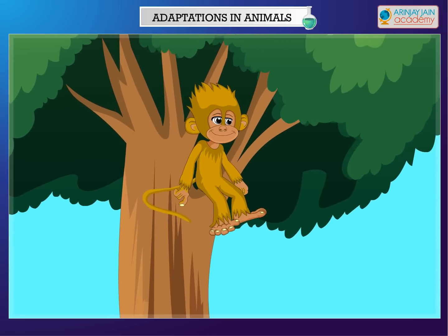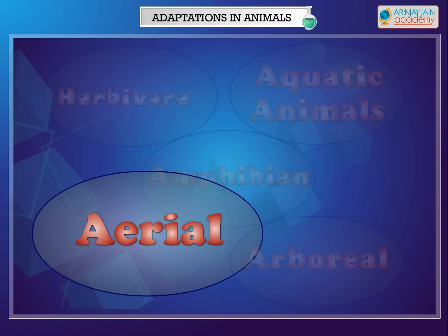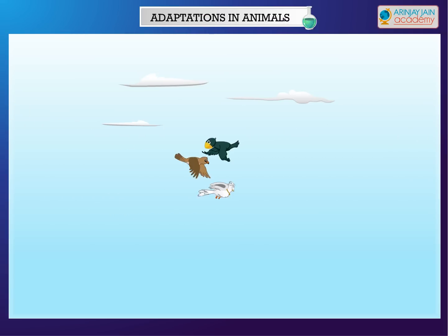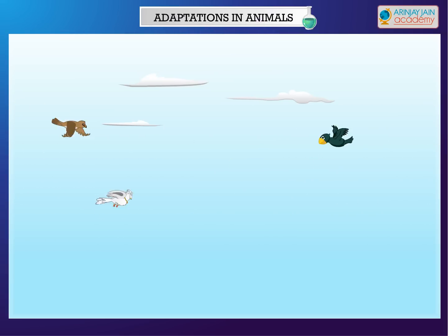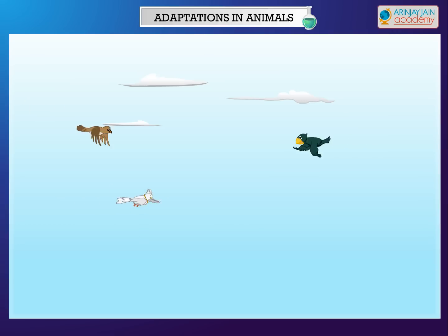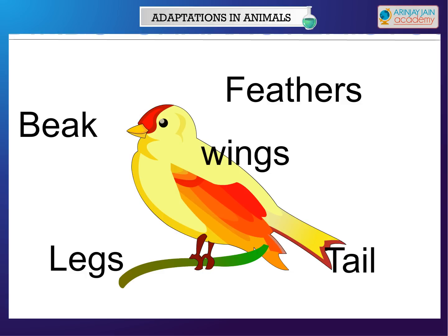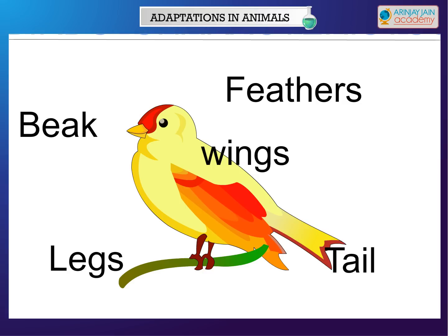Aerial Animals. Animals that fly are called aerial animals. Birds and bats are examples of aerial animals. They have wings which help them to fly, light and hollow bones that make their body light and help them to fly. Feathers on their body keep them warm. They also have claws which help them to hold on to branches. Their tail helps them to change direction while flying.